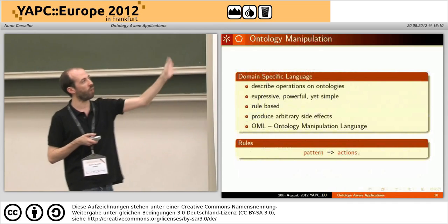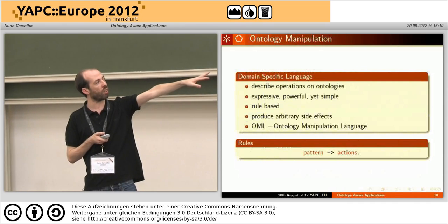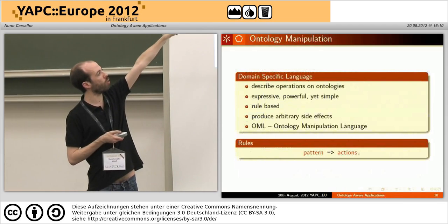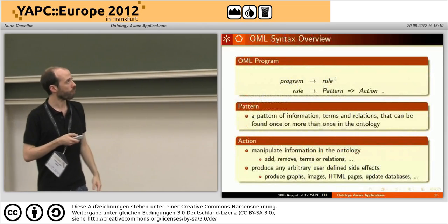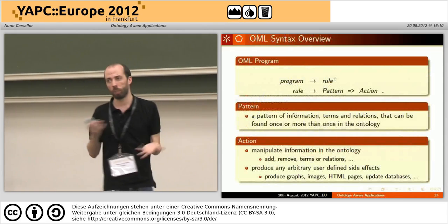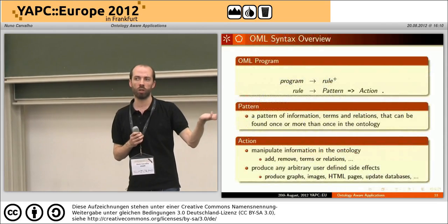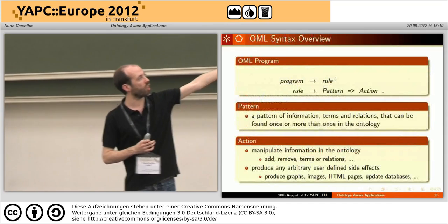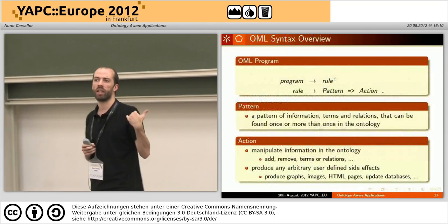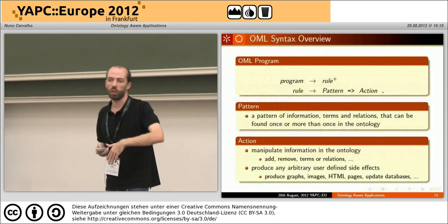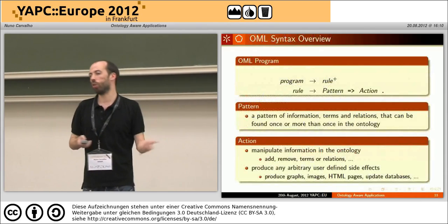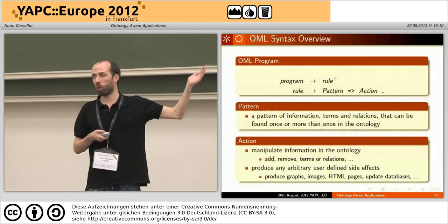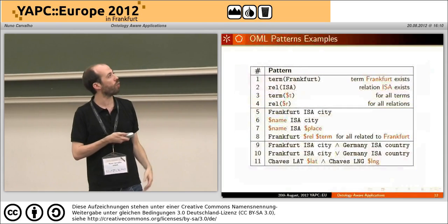A program written using this language is a set of rules. On the left side of the arrow, we have a pattern — the information you are looking for in the ontology, either concepts or relations. On the right-hand side of the arrow, we have an action — the operation you want to execute when that pattern is found. For example, if you are trying to find cities in the ontology, you may want to print: 'I found a city and the city name is X.'